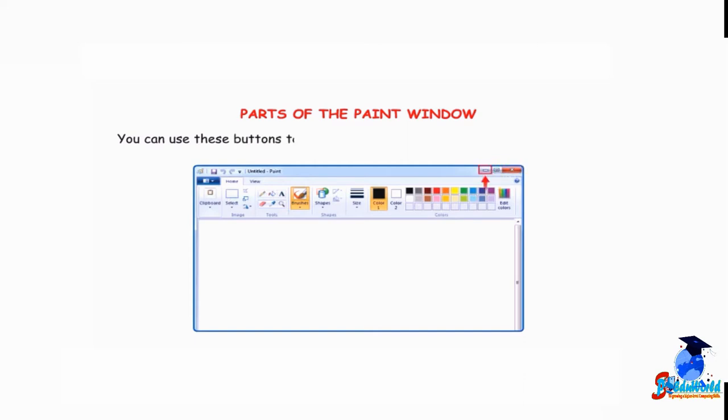Observe the buttons at the top right side of the title bar. You can use these buttons to minimize, maximize, and close the Paint window. These buttons are known as control buttons.